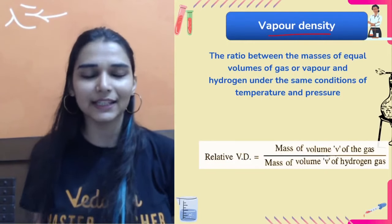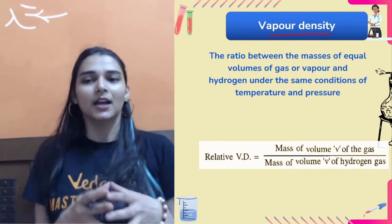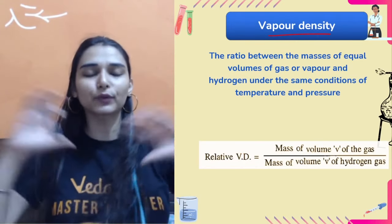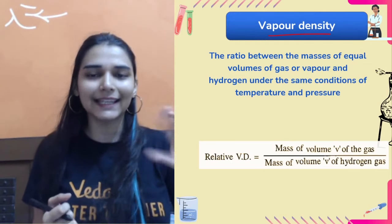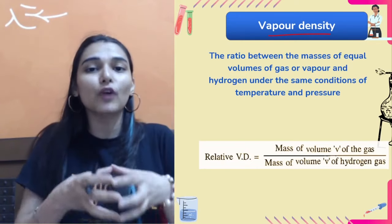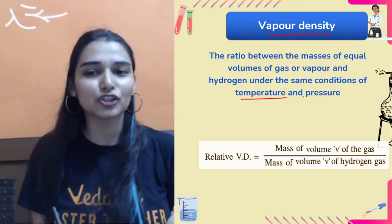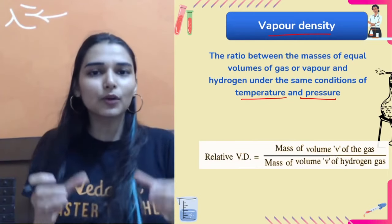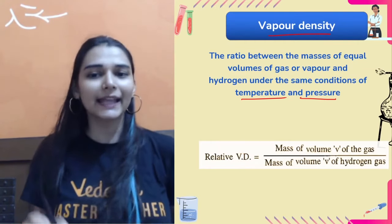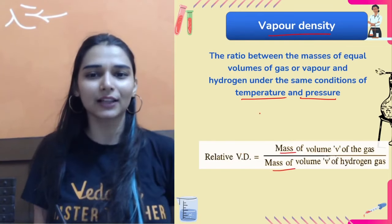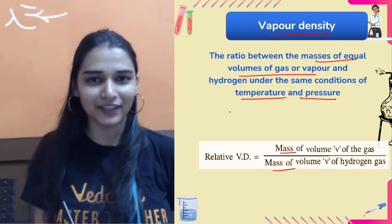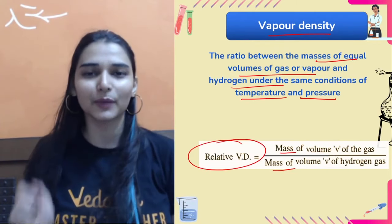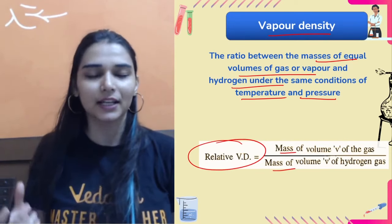Now vapor density — you may get small numericals from this topic. For vapor density, take two gases: one must be hydrogen gas. Take equal volumes of both gases at the same conditions of temperature and pressure, then find the ratio of their masses. This ratio of mass of equal volumes of the gas to hydrogen gas at the same temperature and pressure is called relative vapor density.